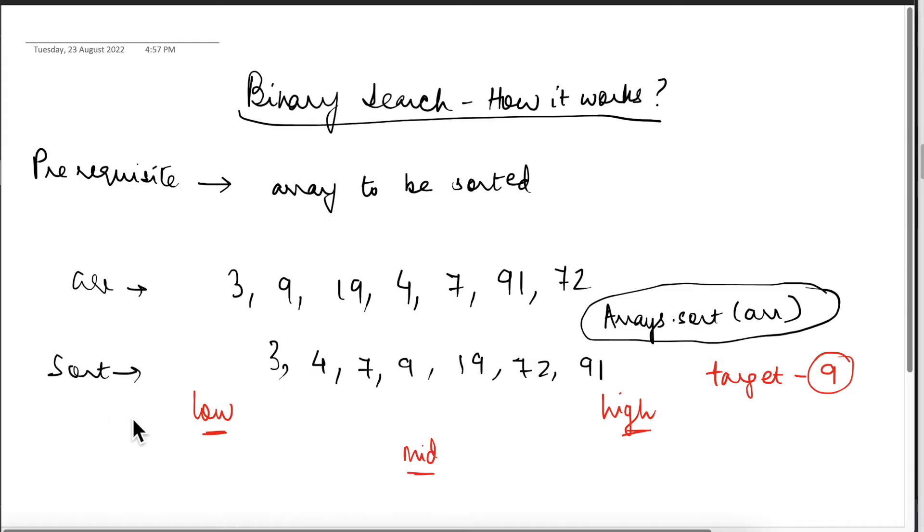Now we will move to the whiteboard to understand how this algorithm works and we'll also do a dry run. So now we'll just do a very quick whiteboarding of how this binary search algorithm works. So taking this array, the prerequisite I've written, what is a prerequisite for binary search algorithm to work, as we've discussed, the array has to be sorted.